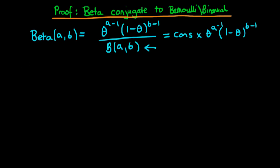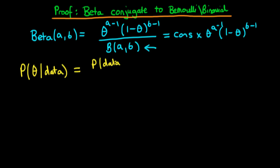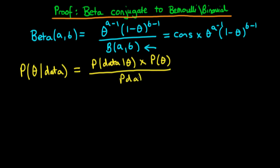To prove that the beta is actually a conjugate prior to the Bernoulli and the binomial distribution, we're first of all going to need our Bayesian formula. So we write that down: the probability of theta given the data — I'm not going to condition on model choice here but you could — is equal to the probability of the data given a choice of theta, in other words the likelihood, times the probability of theta which is just our prior, divided through by the probability of the data.